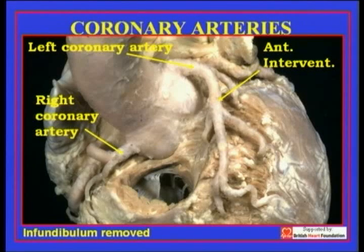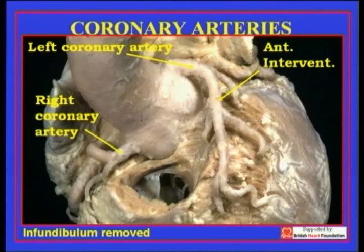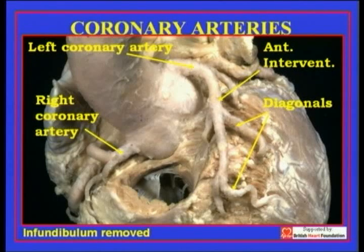Although there are two coronary arteries arising from the aortic root, we name three coronary arteries for the description of coronary arterial disease — so-called three-vessel disease. These coronaries are the right coronary, the anterior interventricular artery, and subsequently we will see the circumflex artery.